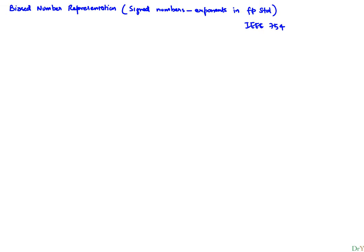To give an intuition behind it: when we think of a floating-point number, we represent it in the scientific normalized form as plus or minus 1.fraction-bits times 2 to the power of some exponent. This exponent can be either a positive or a negative number — in other words, it can be a signed number.